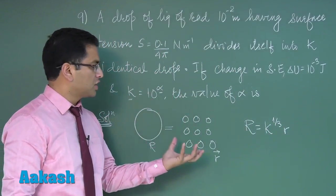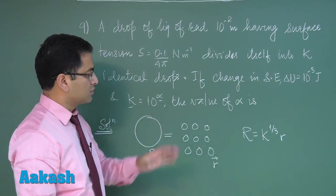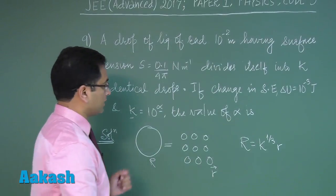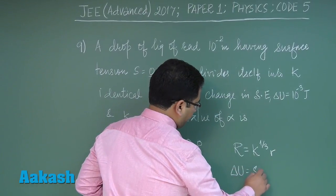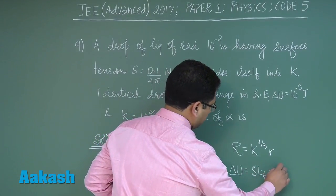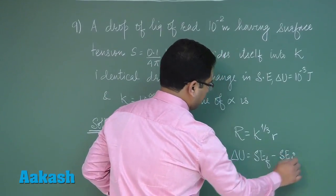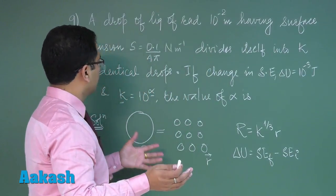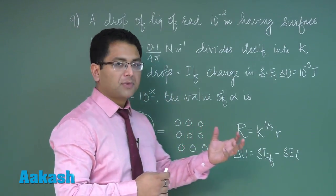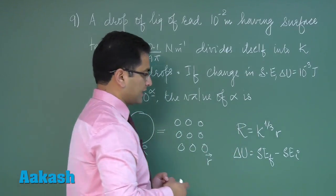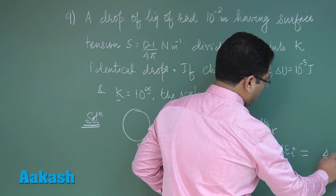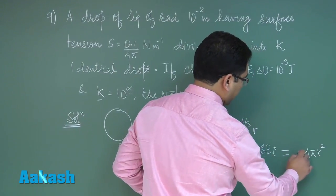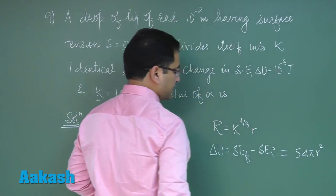Now, ΔU is the final surface energy minus initial surface energy. It's a known fact that when a drop splits into droplets, the overall surface energy increases. The surface energy formula is 4πr²S.